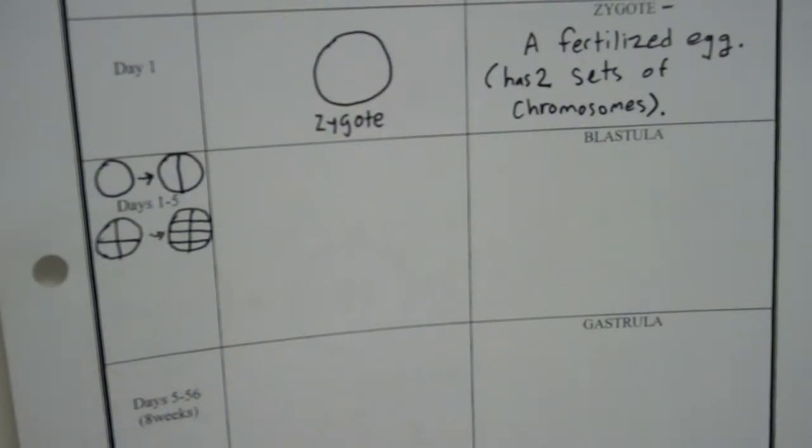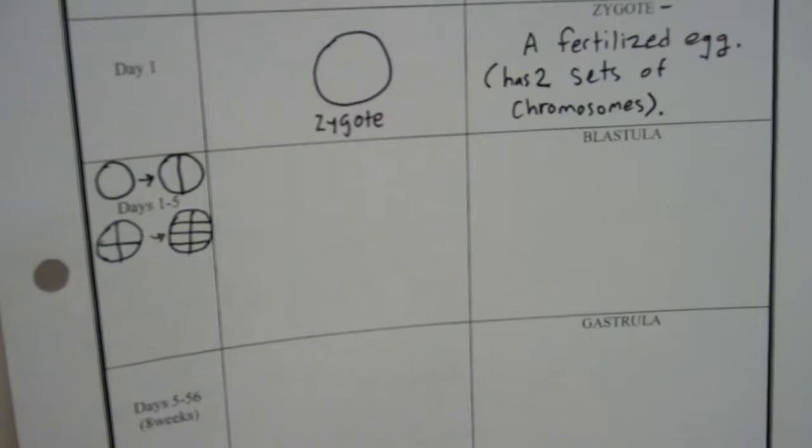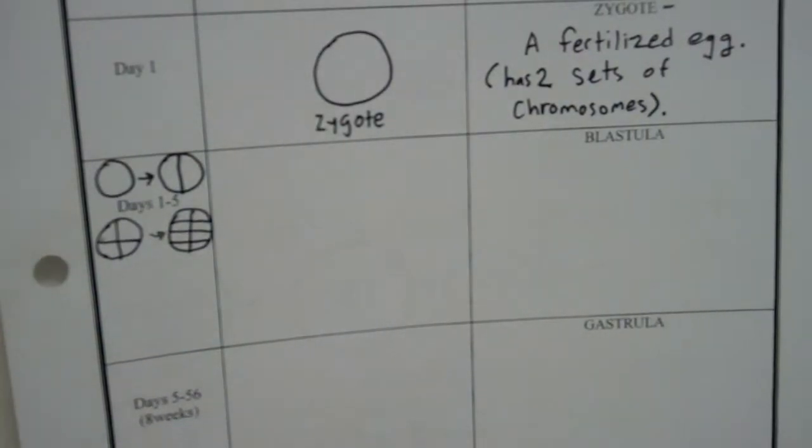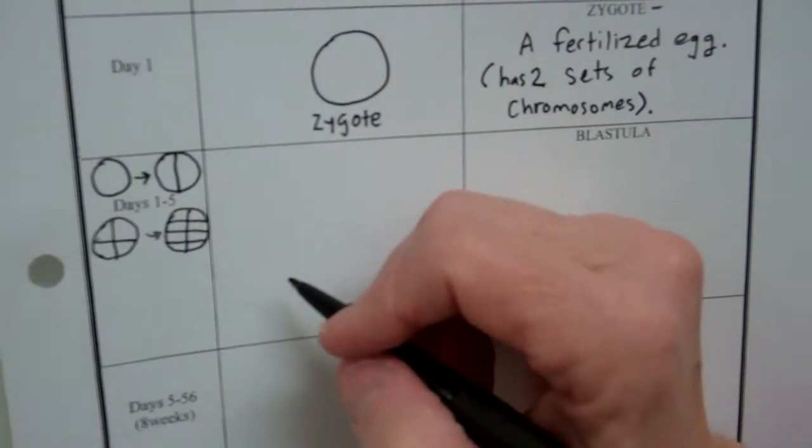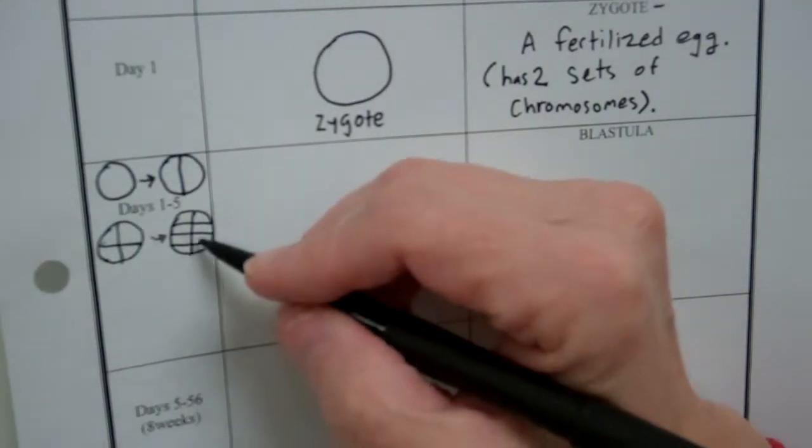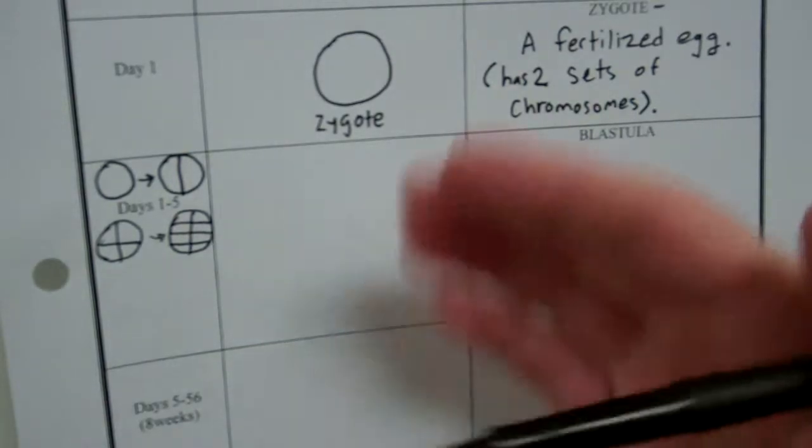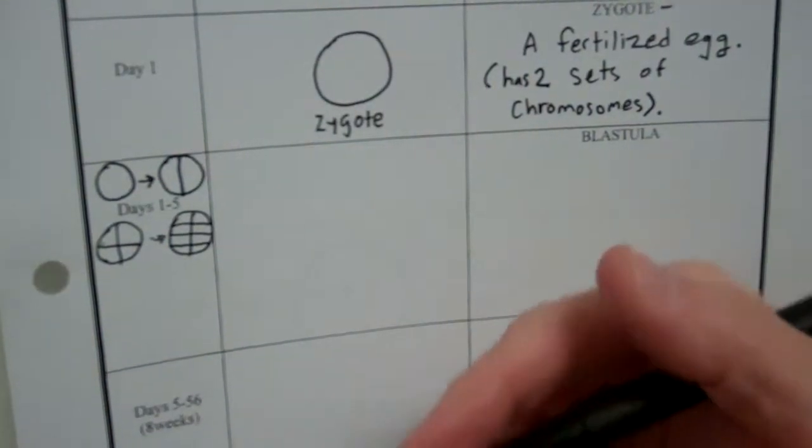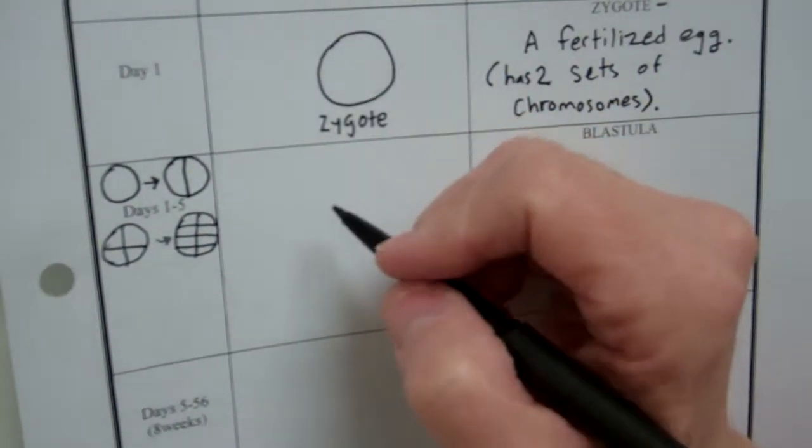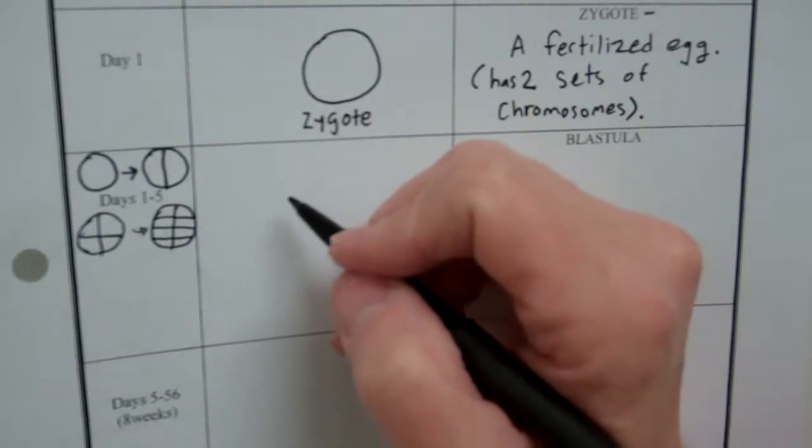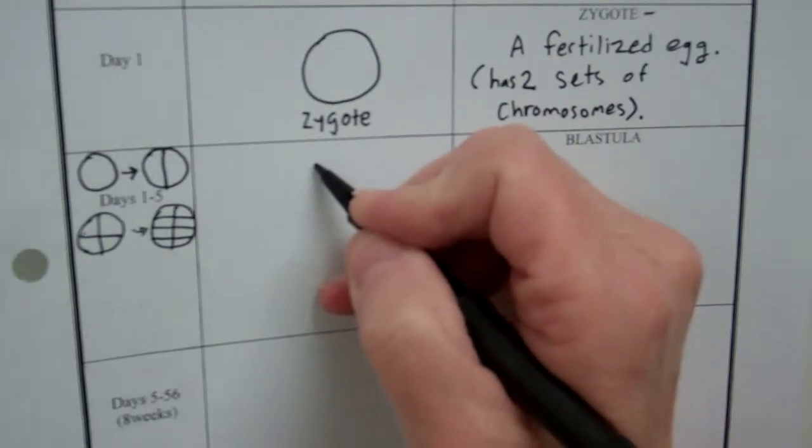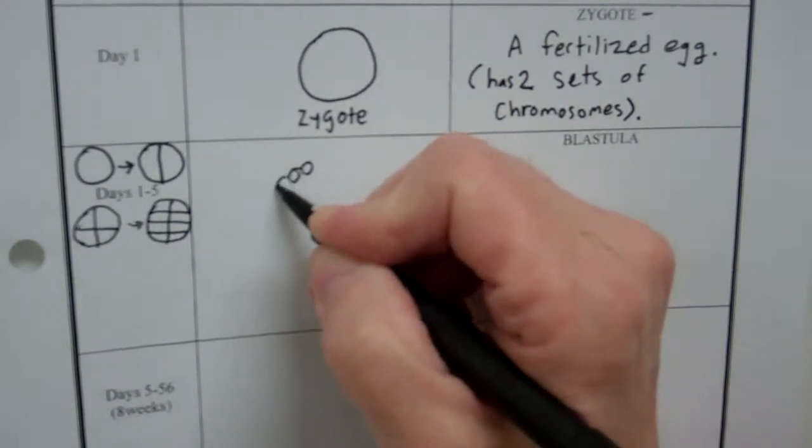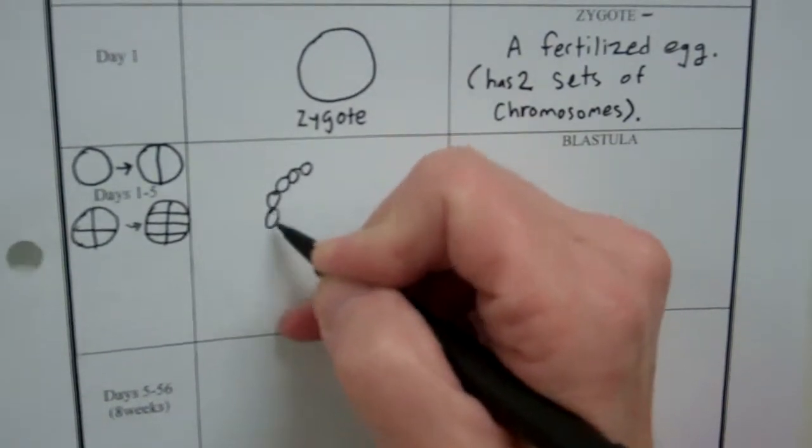So for days one through five, you have several cell divisions. And pretty soon you get this ball of cells. Now, from the outside, it's going to look something like this with a bunch of cells. If we could cut that cell open and look at it from the side, it's going to look like this. And it's going to be a hollow ball by now. Hollow ball of cells. And I'm just going to draw it like this.